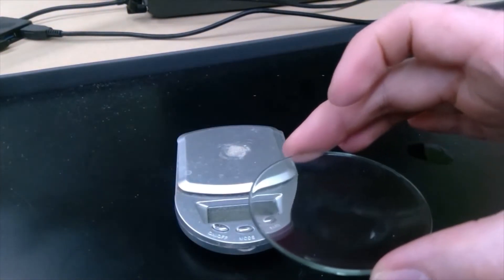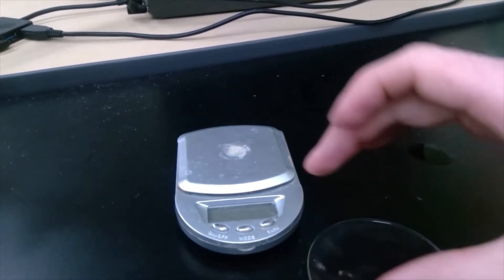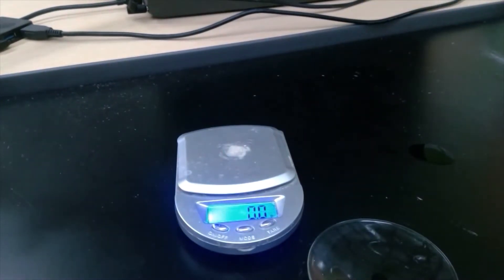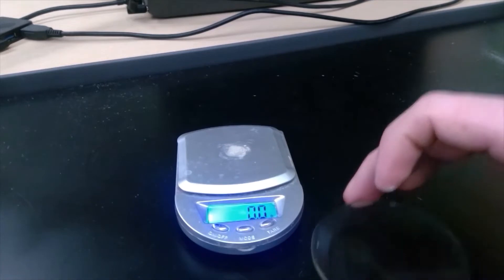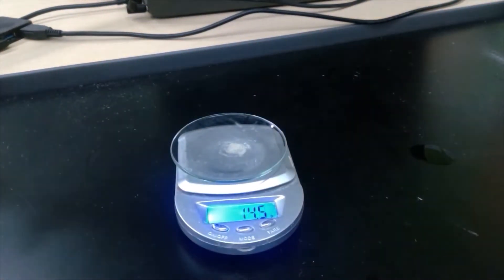What do you observe about this liquid beforehand? Let's measure the mass of the watch glass and the alcohol. 14.5 grams.